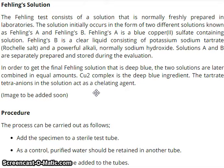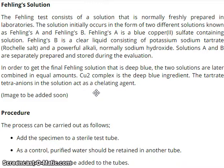Failing solution — what is this? The Failing Test consists of a solution that is normally freshly prepared in laboratories. The solution initially occurs in the form of two different solutions known as Failing A and Failing B. Failing A is a blue copper-sulfate-containing solution. Failing B is a clear liquid consisting of potassium-sodium-tartrate, Rochelle salt, and a powerful alkali, normally sodium hydroxide. Solutions A and B are separately prepared and stored. To get the final Failing solution, the two solutions are combined in equal amounts. The copper-2 complex is the key ingredient, and the tartrate tetra-anion in the solution acts as a chelating agent.